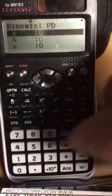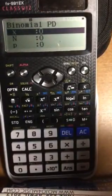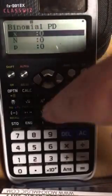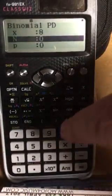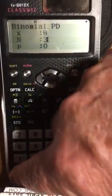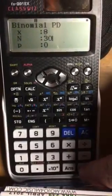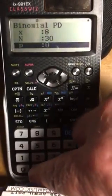We've got a variable function. So the number x that we're looking for is 8. N, which is the total number of events, is 30. And the probability of success was 0.2.